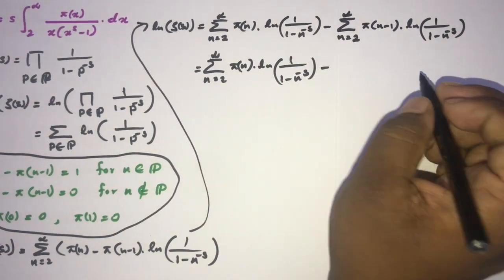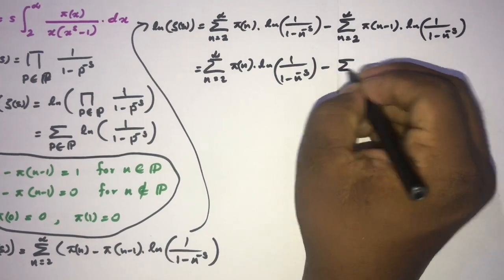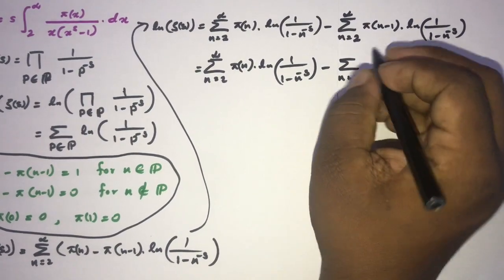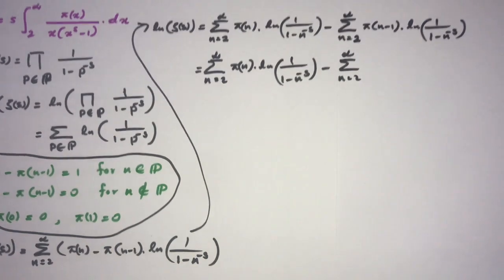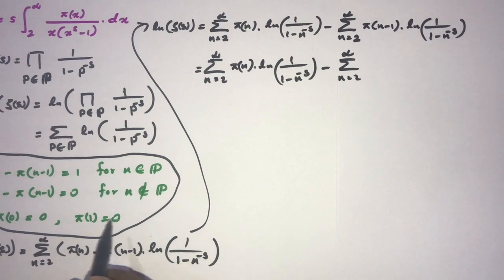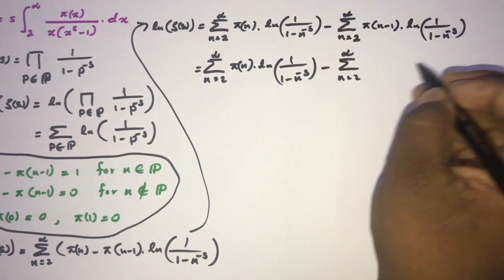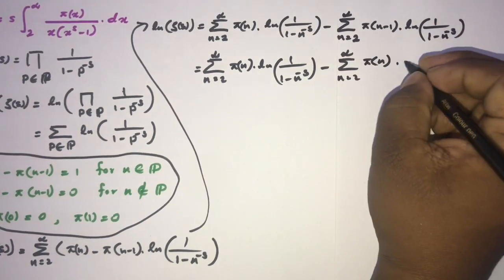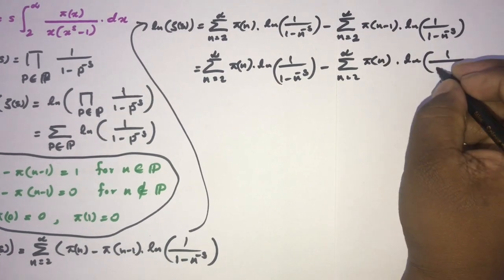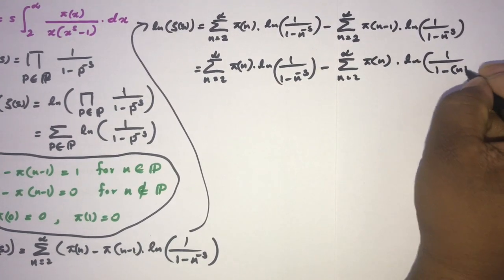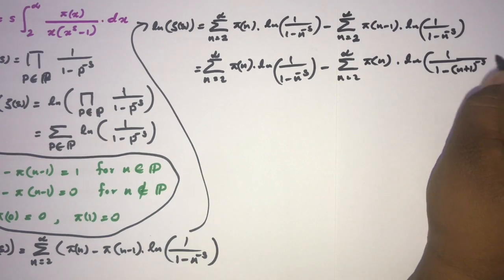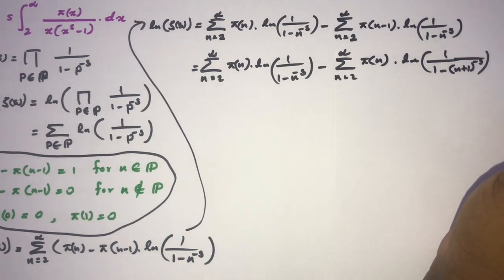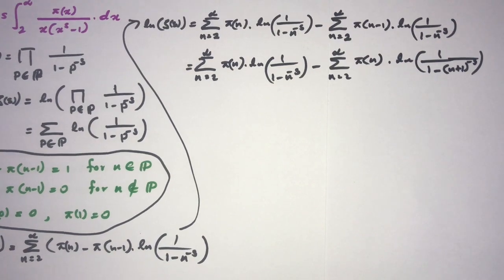Now I am going to reindex the second sum. Since pi(0) and pi(1) are both equal to 0, there is no issue. Substituting n plus 1 for n, we get pi(n) times natural log of 1 over 1 minus (n+1) to the minus s.